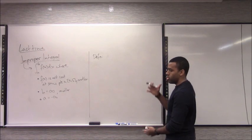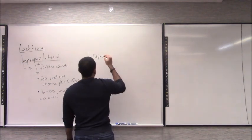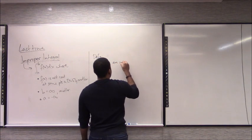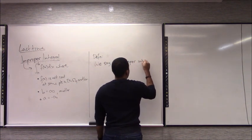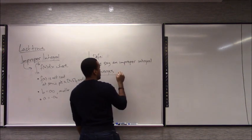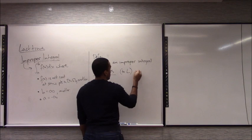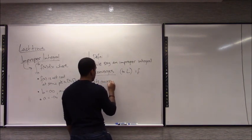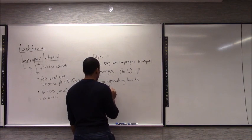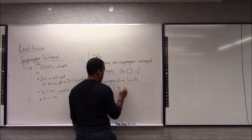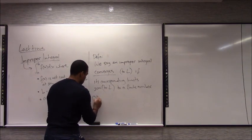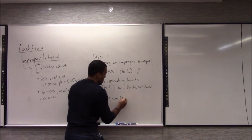I want to tell you what happens whenever these limits actually work out. Definition: we say an improper integral converges — that's the key word here. It converges to L if its corresponding limits sum to L, or more generally to a finite number. Otherwise, we say it diverges.